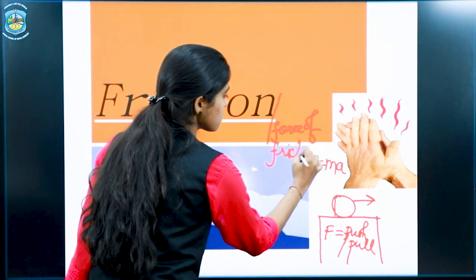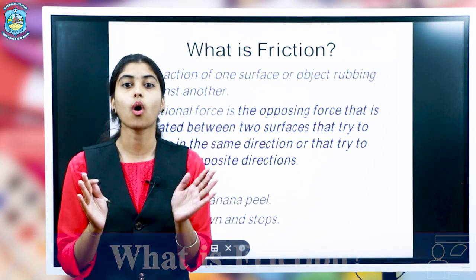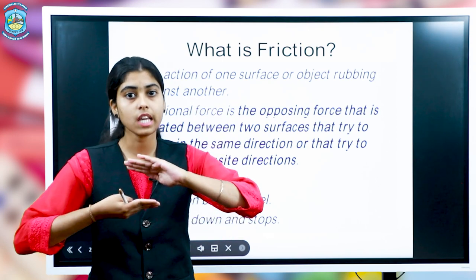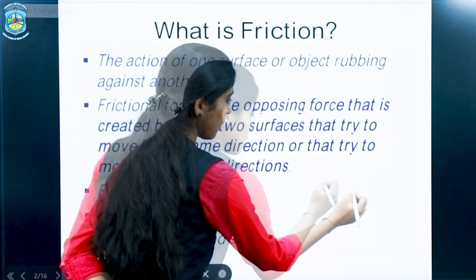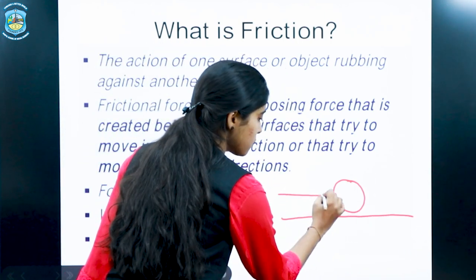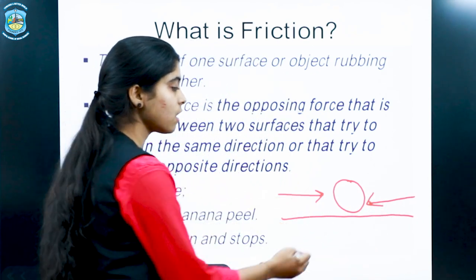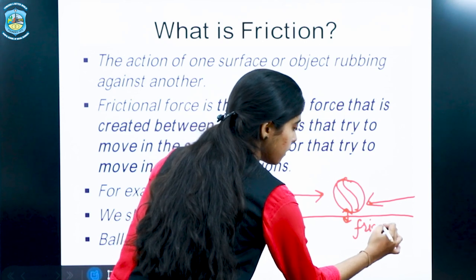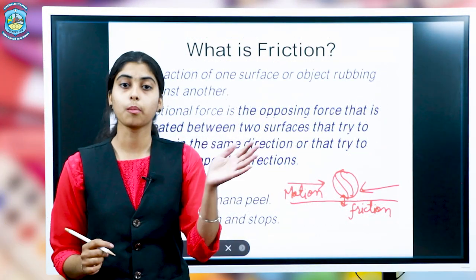Now we will see in brief what force of friction is. Friction is a contact force and it occurs when two objects are in contact with each other — the surfaces of the two objects are touching each other. Basically, friction is an opposing force. If we want to displace a ball along the ground, we apply a certain force causing motion. Friction will oppose that motion. So we can conclude that friction is an opposing force which opposes the motion of an object.